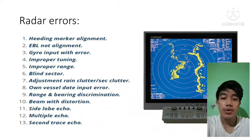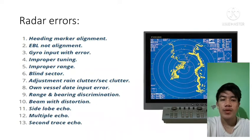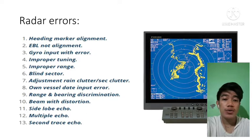Next, multiple echoes: the successive reflection of a sound wave from a number of obstacles causes us to hear echoes of the sound transmitted one after another. Second trace echoes are echoes received from contact at an actual range greater than the radar range setting.